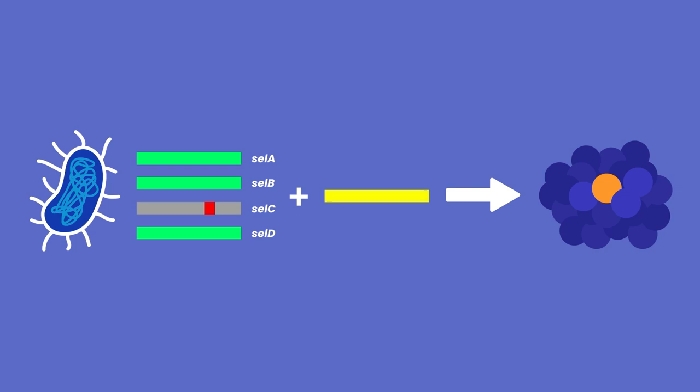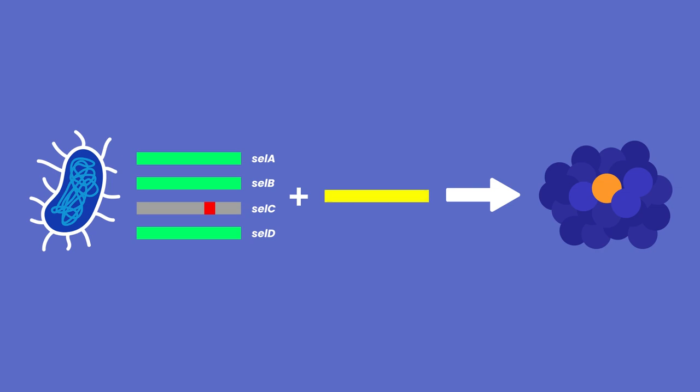When the cells had a mutation in selC, the DNA that recovered protein production seemed to be creating a strange tRNA molecule that was much different to a normal tRNA. So, they checked the selC gene itself, and they were right.